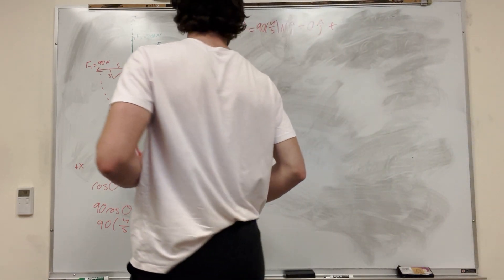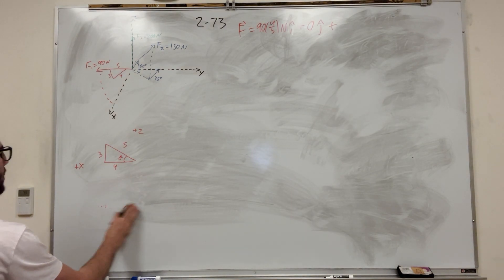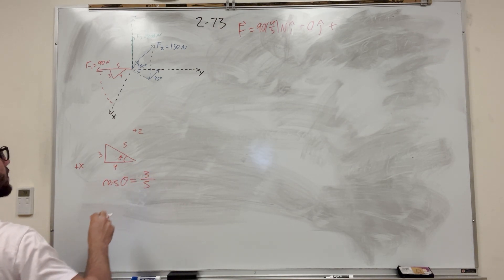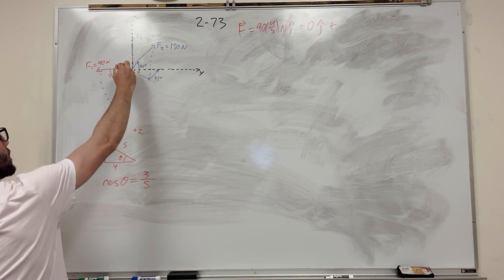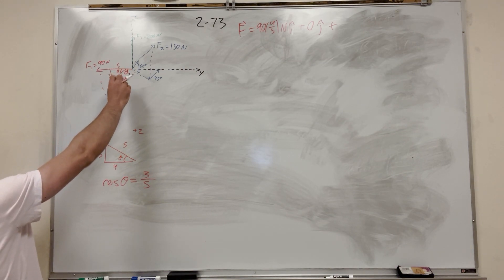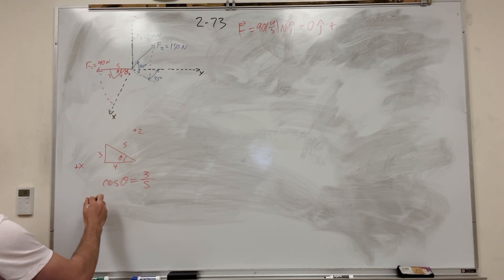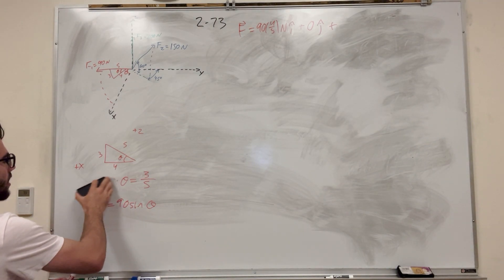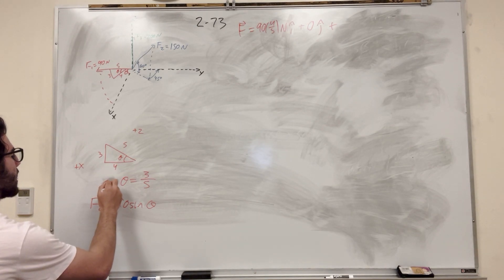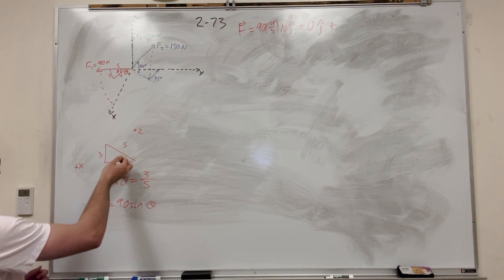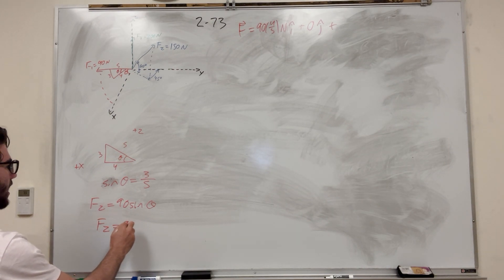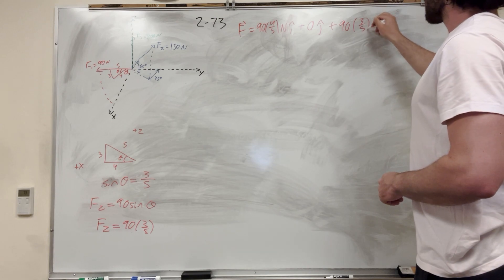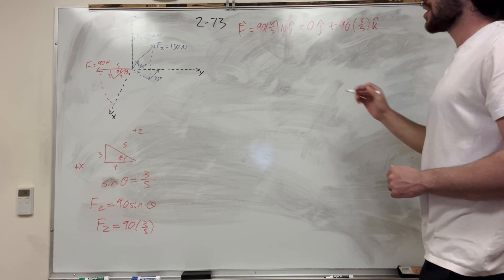Going back to what's happening in the z-direction: sine of theta is equal to opposite over hypotenuse, which is 3 over 5. Because we have similar triangles, this theta equals that theta. So the force in the z-direction is 90 × sine of theta, and since sine of theta is 3 over 5, it's 90 × (3/5). We don't even need to find the angle itself. So that's force 1 broken up into its components.